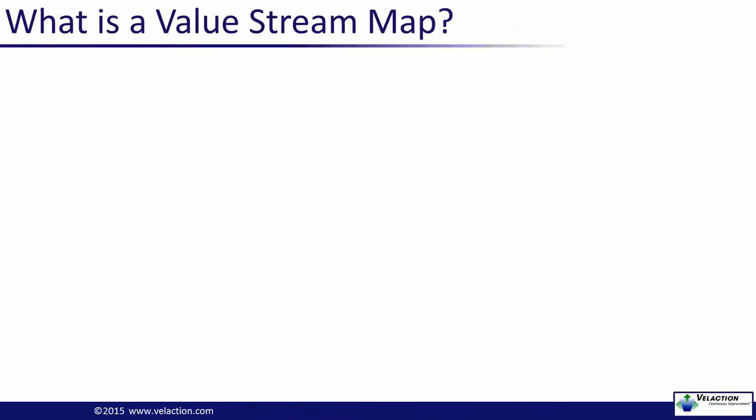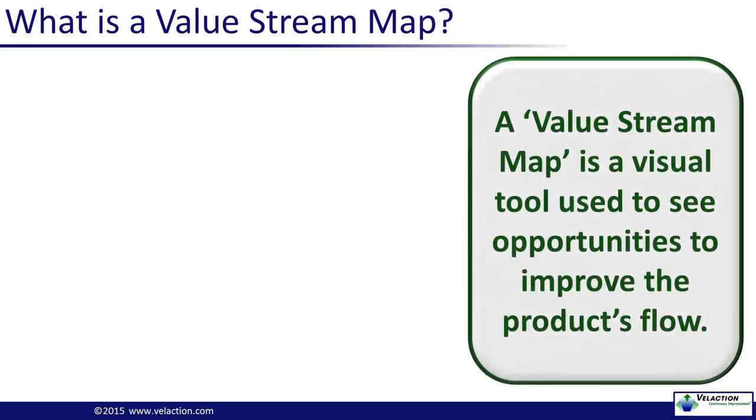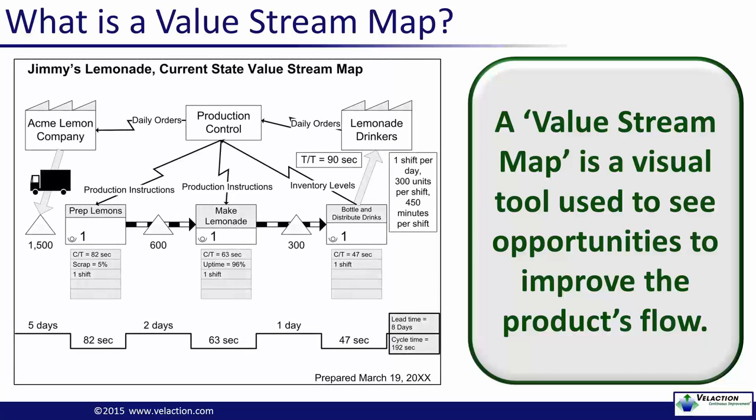So now we've talked a little bit about what a value stream is. Let's move on to what a value stream map is. A VSM is simply a snapshot view of how work flows through your system. This visual tool makes the opportunities for improvement jump out at you.